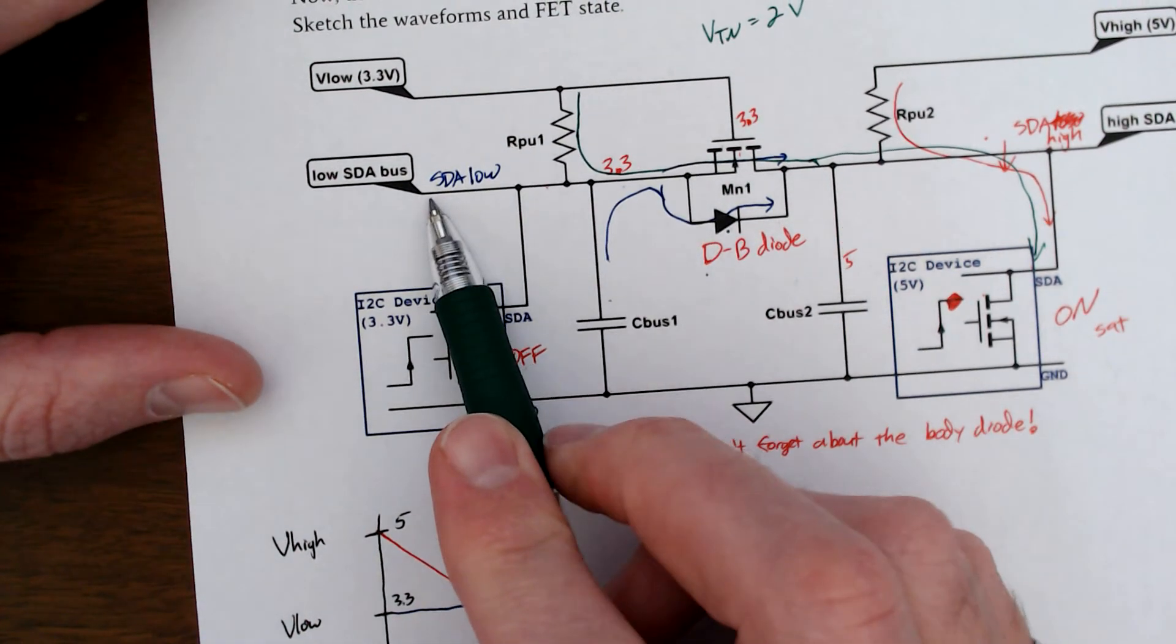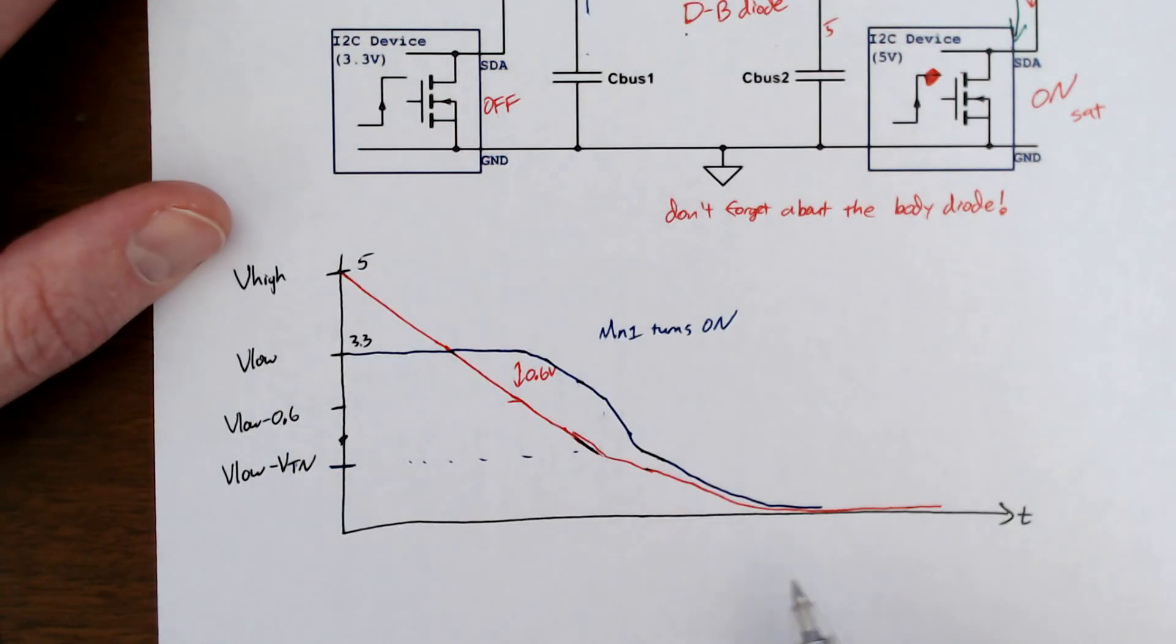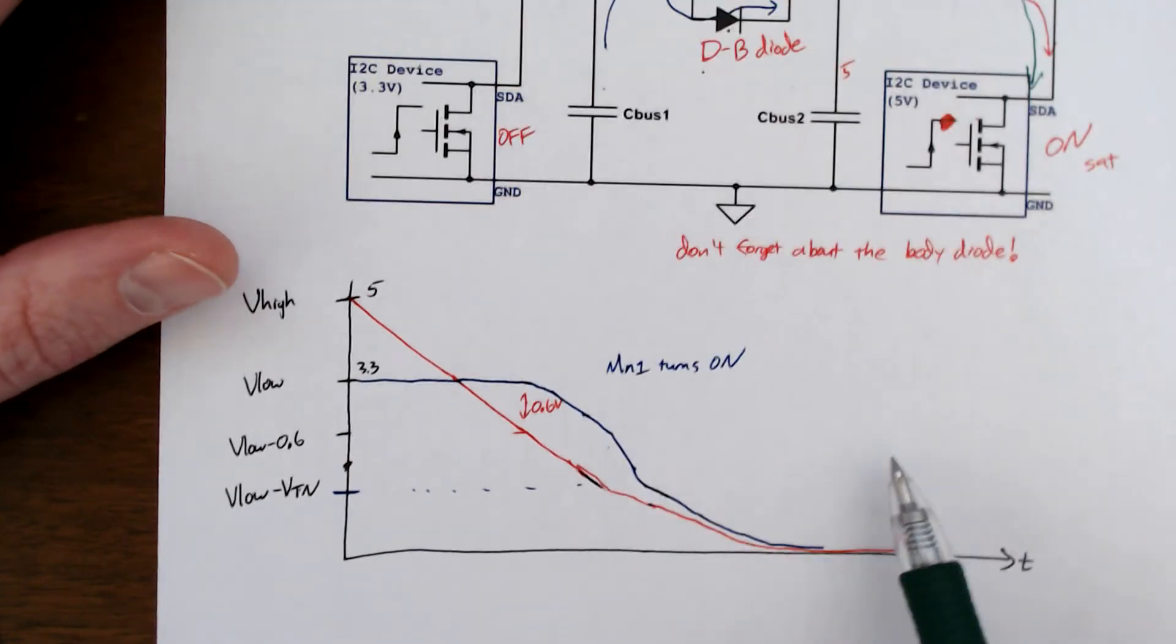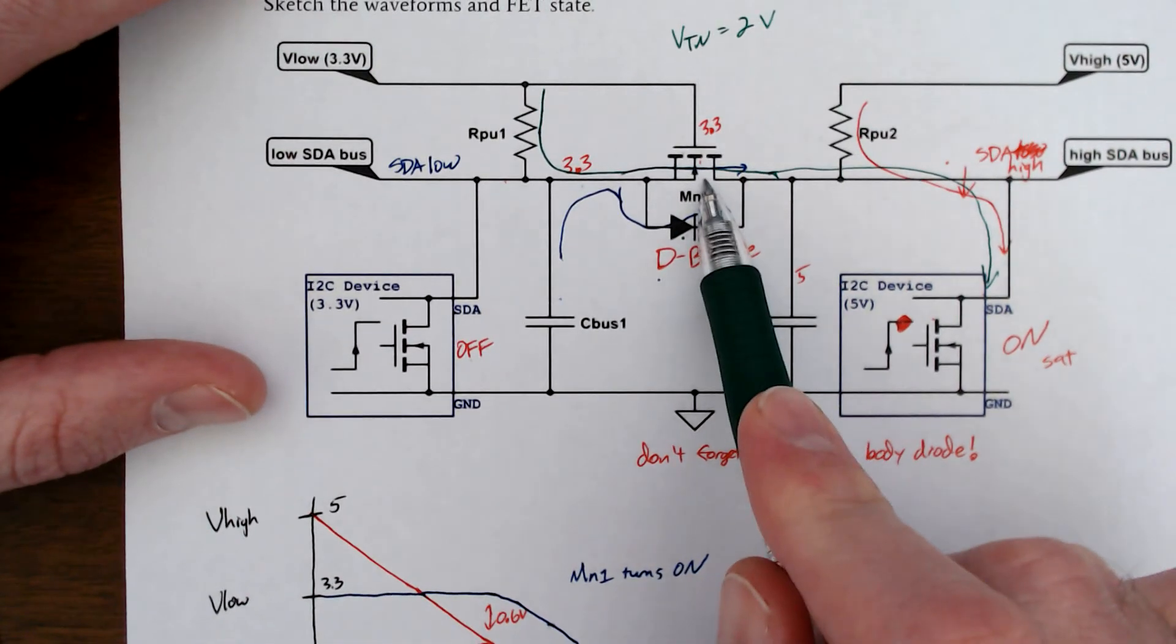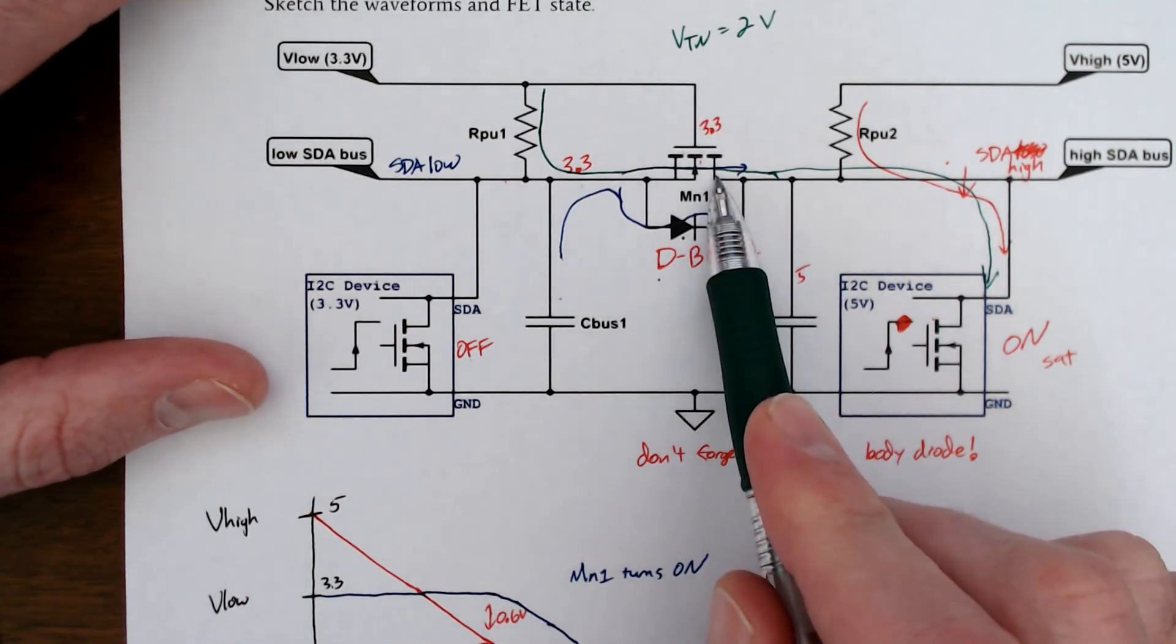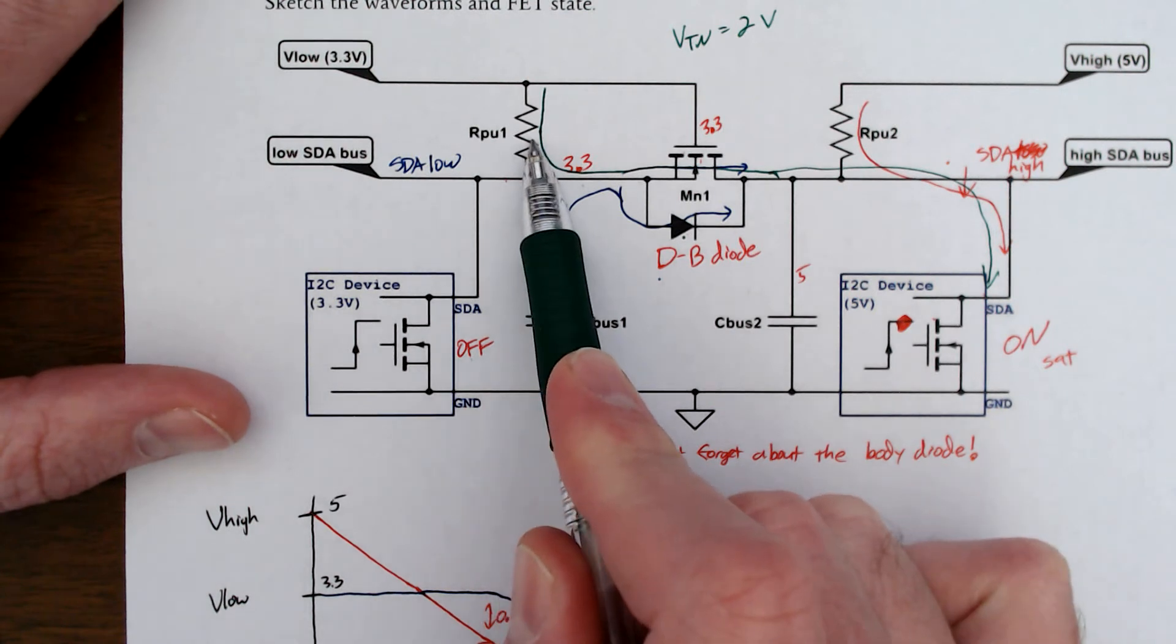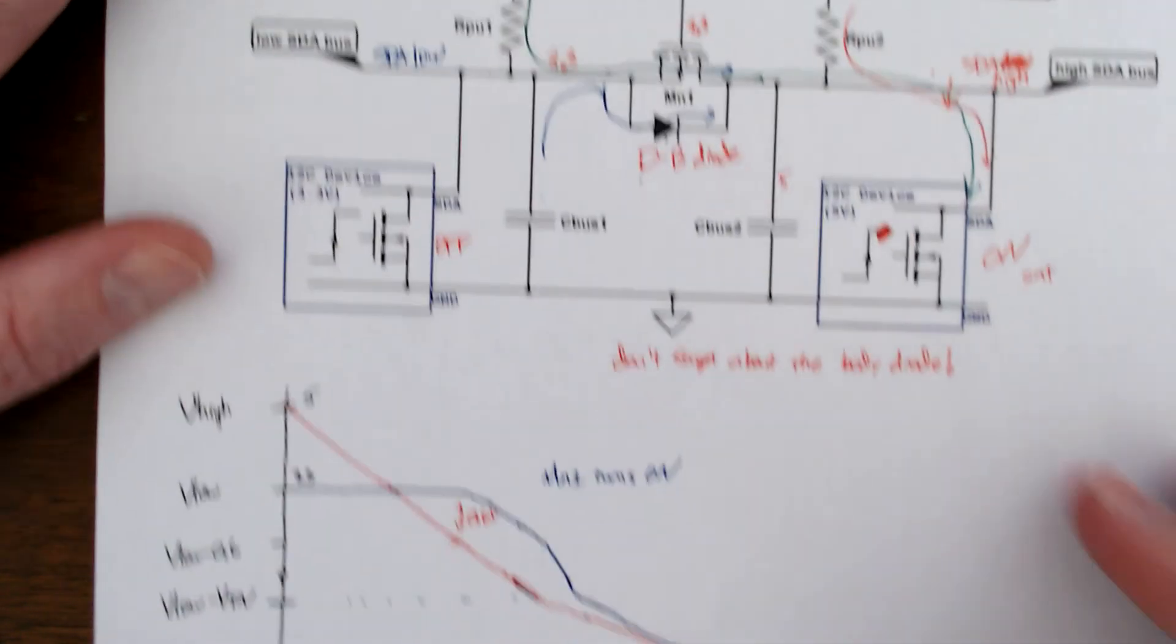this will turn back off through the MOSFET and then through this other switch that's inside of the device. So the SDA low on the left side will be just a little bit higher voltage than the other one. But if we choose our MOSFET appropriately so that its on resistance is small, especially compared to the pull-up resistor, then we'll be good to go.